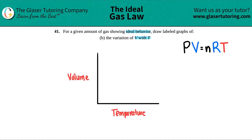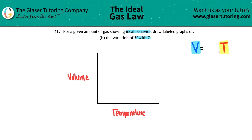You just have to focus in on the two variables they're talking about. In this case, we care about volume and we care about temperature. I don't care about any of these other things. So we can basically say bye-bye to the others, assuming that everything else is remaining constant. Basically, we have V equals T.